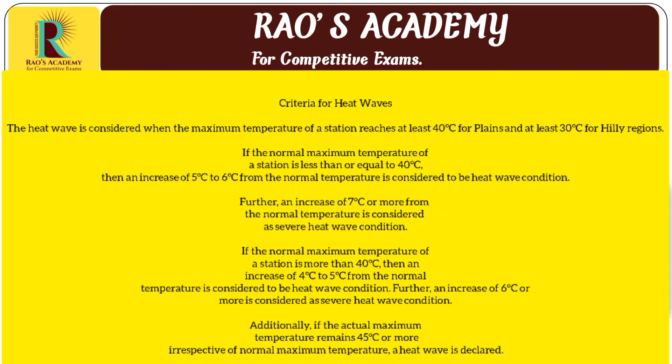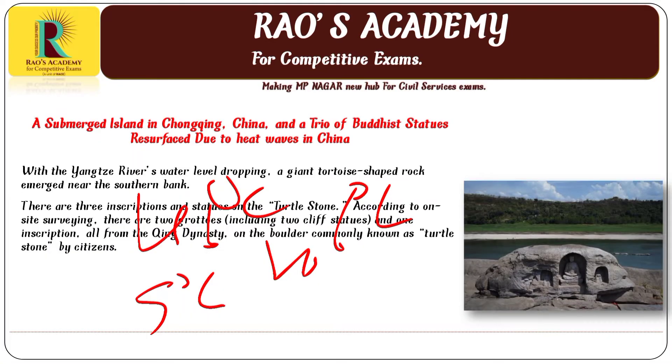When the normal maximum temperature of a station is less than or equal to 40 degrees, heat wave departure from normal is 5 to 6 degrees, and severe heat wave departure from normal is 7 degrees or more. When normal maximum temperature is more than 40 degrees, heat wave departure from normal is 4 to 5 degrees, and severe heat wave departure is 6 degrees or more. When actual maximum temperature remains 45 degrees or more, irrespective of normal maximum temperature, a heat wave should be declared.